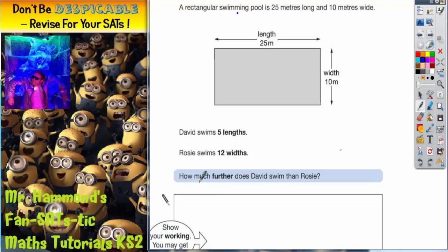What have we got to do? It says David swims 5 lengths, Rosie swims 12 widths. How much further does David swim than Rosie?